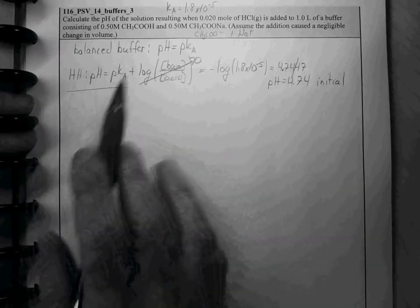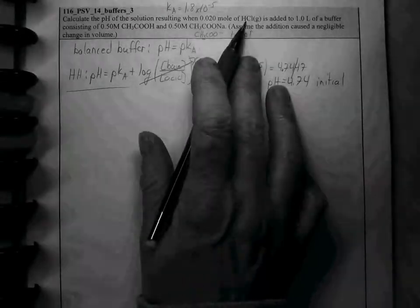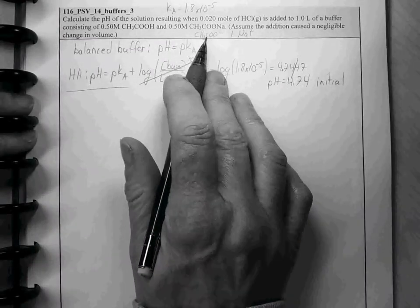Alright, so we add a small amount of HCl, a strong acid. The added acid is going to react with the base part of the buffer.